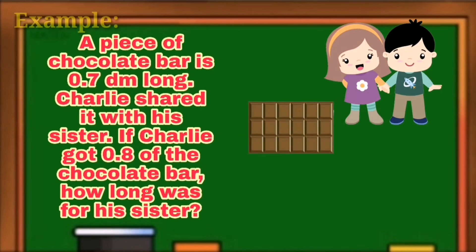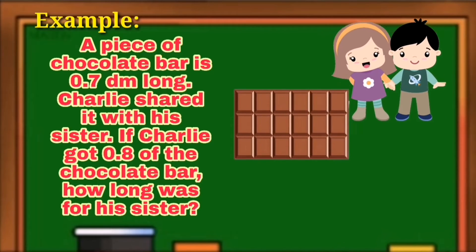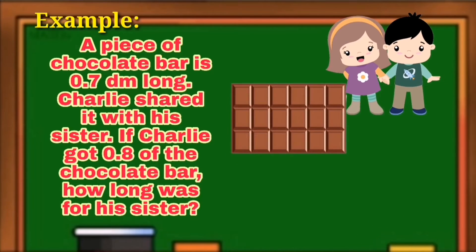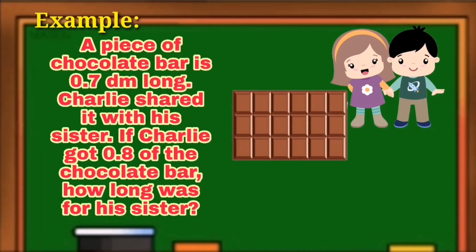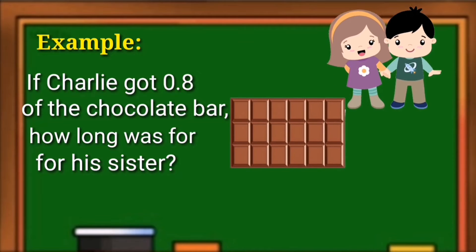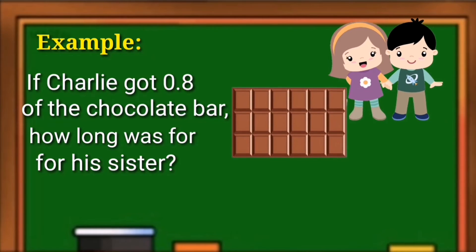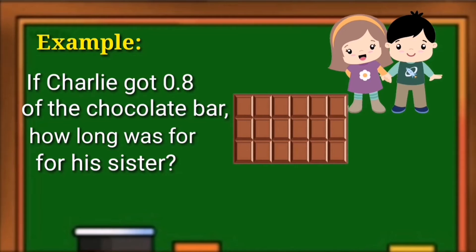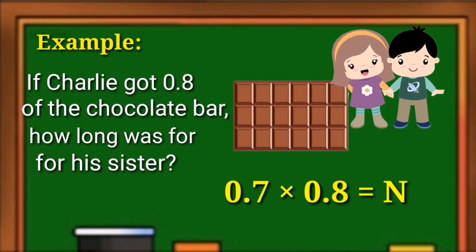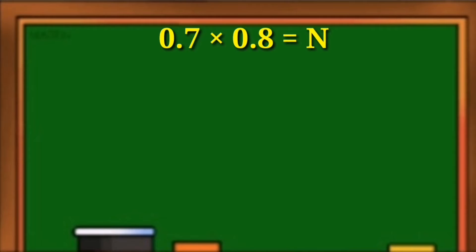To answer this problem, we're going to use visual representation. How are we going to solve the problem? What is asked is: if Charlie got 8 tenths of the chocolate bar, how long was for his sister? The operation to be used is multiplication. Here is the equation: it involves two decimal numbers — 7 tenths times 8 tenths equals n.